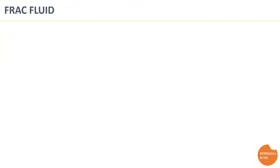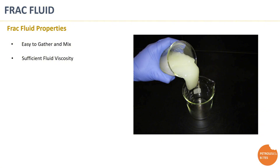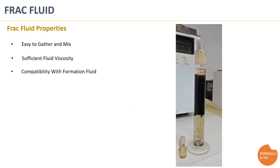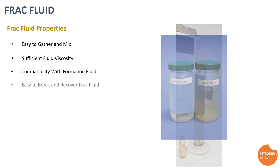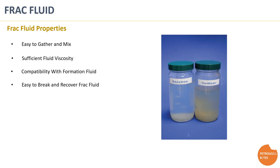Moving on to frack fluid — it's the heart of the frack treatment. The fluid must have several properties in order to execute the frack treatment without concern. It should always be readily available and easy to gather and mix, which is why water is used as the base of most frack fluid systems. It should also have enough viscosity to carry proppant and minimize frack fluid loss to the formation during job execution. Compatibility with formation fluid is essential to avoid forming any emulsion or sludge that may cause formation damage, and finally it must allow ease of recovery after finalizing treatment placement.